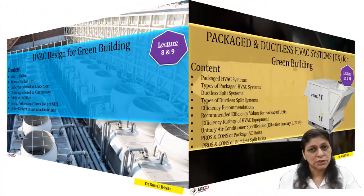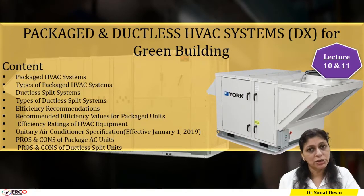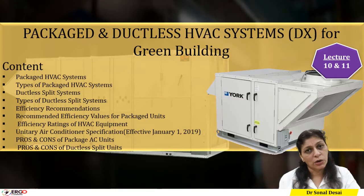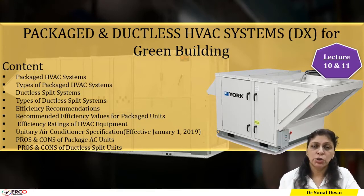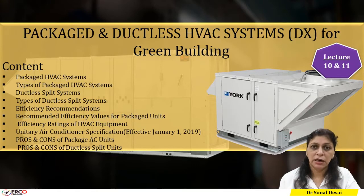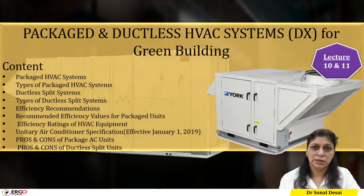Smaller HVAC units — called package or ductless units — are discussed in videos where less than 20,000 square feet of requirement exists, or where there is a requirement for a smaller size for a single-floor building. Tier 1, Tier 2, and advanced tier HVAC systems, package AC systems, energy-labeled systems, and Energy Star systems are also discussed in this series.